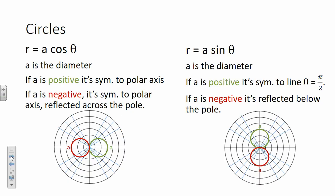Next, we want to talk about our two other circles. We have a circle of the form R equals A cosine of theta, and R equals A times the sine of theta. A is the diameter of each of these circles. If A is positive on the cosine, it's symmetric to the polar axis. If A is negative, it's still symmetric to the polar axis, but it's been reflected across the pole — so it will be on the left of the pole.